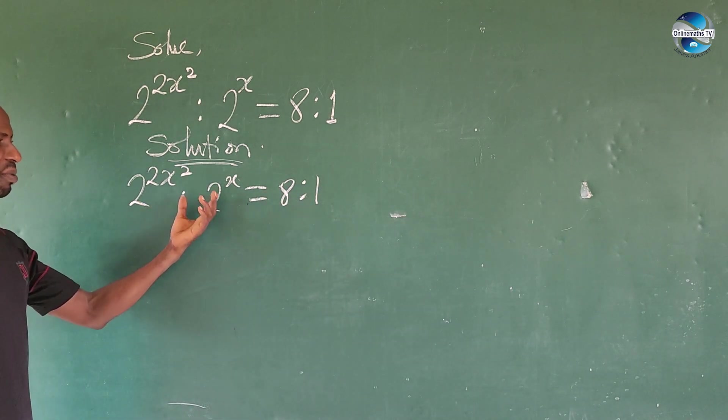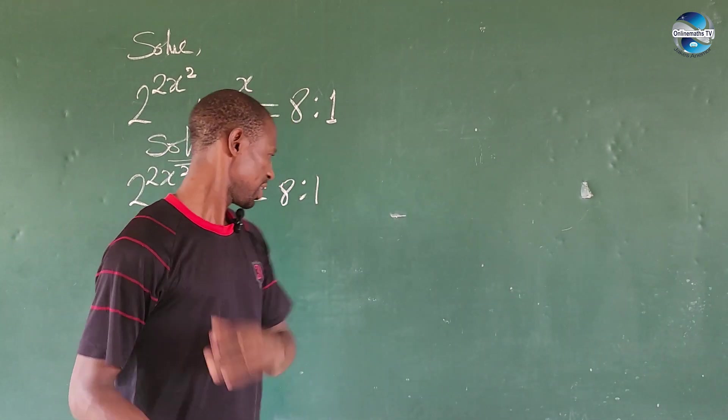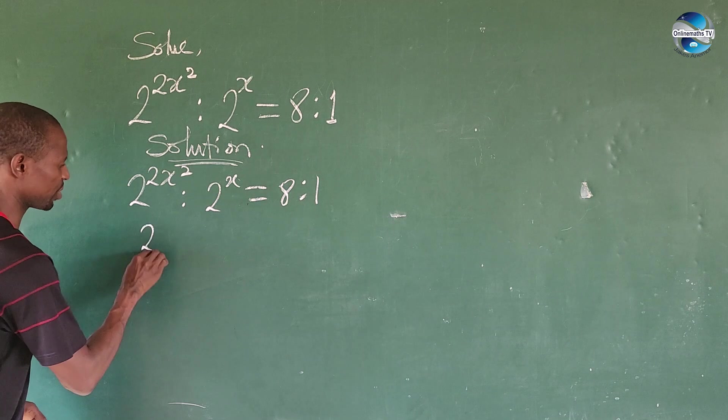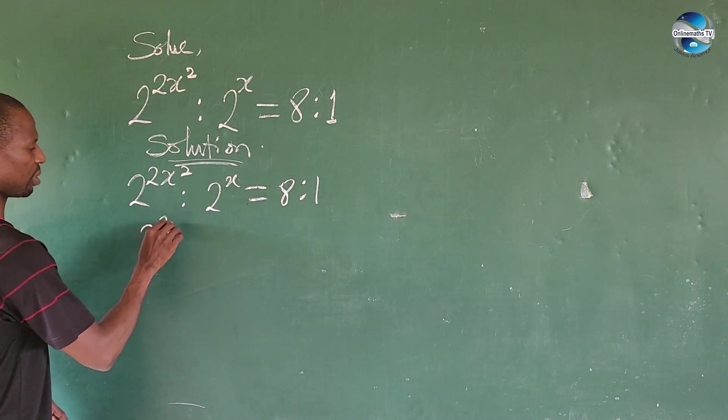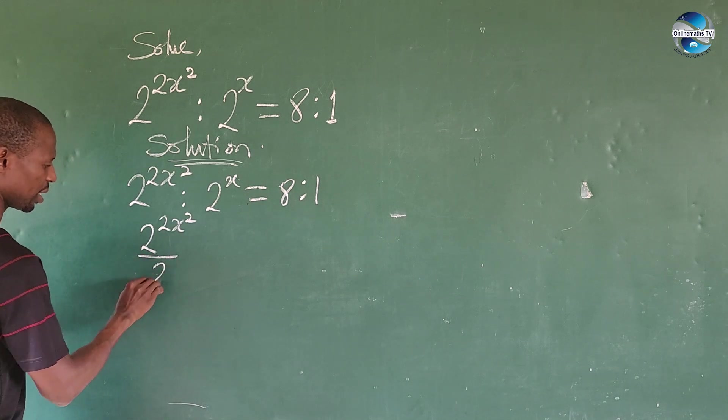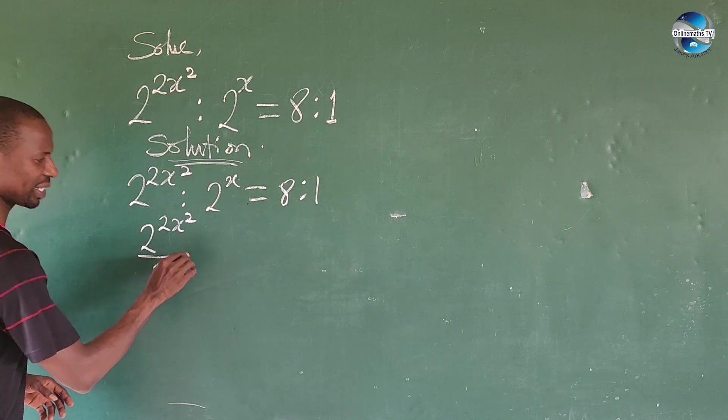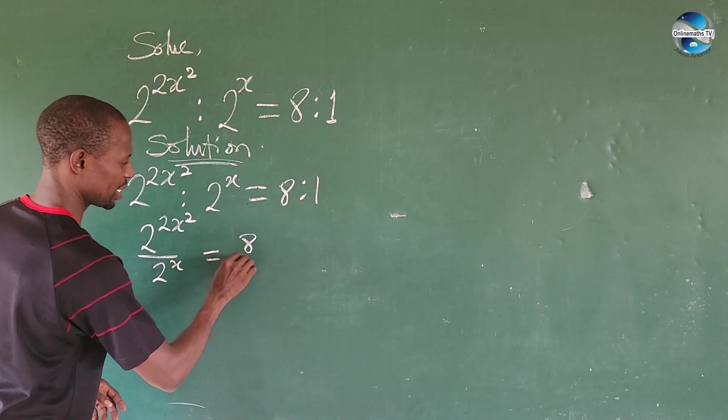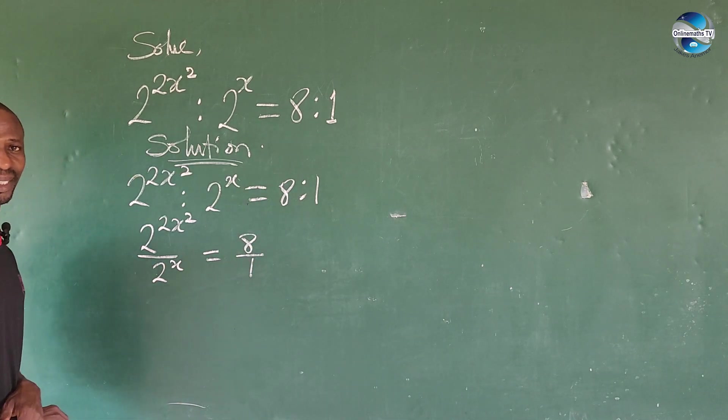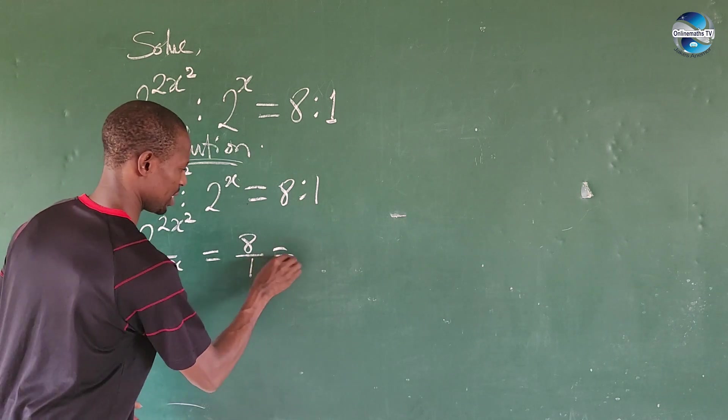All you need to do here is rewrite the ratio. Ratio simply means division. This gives us 2^(2x²) over 2^x equals 8 over 1. Of course, 8 over 1 is the same thing as 8, so this equals 8.